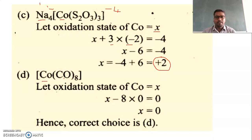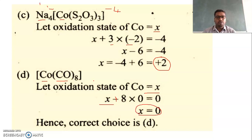Next example: a cobalt carbonyl complex containing eight carbonyl (CO) ligands. Taking the oxidation state of cobalt as x: x + 8×0 = 0. Simplifying, x = 0. This is a neutral complex, so cobalt is in the zero oxidation state.